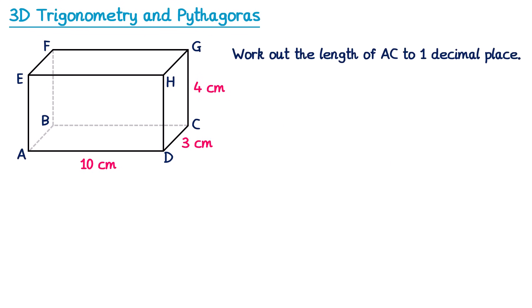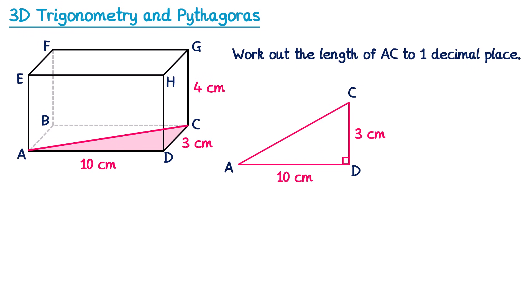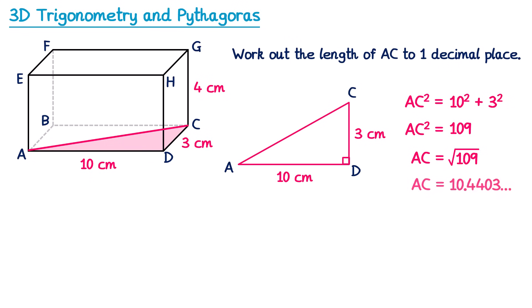What about if we were asked to work out the length of AC to one decimal place? Once again we start by drawing the line from A to C, then look for a right-angled triangle involving that line. I can see one on the base of the cuboid: triangle ADC, with base 10 and height 3. AC is the hypotenuse, so AC² = 10² + 3² = 109. Square rooting both sides, AC = √109, which rounds to 10.4 cm.